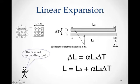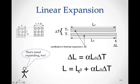The total expansion ΔL is equal to the coefficient of thermal expansion (α) times the original length (L₀) times the change in temperature (ΔT). The new overall length from one end to the other is simply L₀ plus ΔL, or L₀ + α·L₀·ΔT.